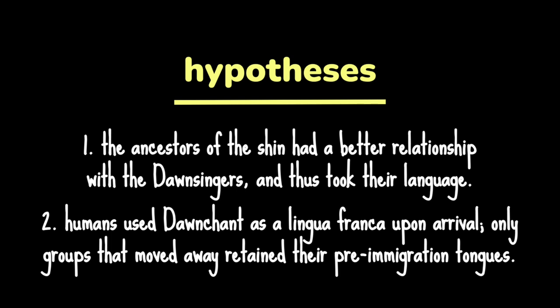The second hypothesis is that when humans migrated from Ashyn, they weren't a linguistically homogenous group — they instead spoke many different languages. And so to communicate, they used Dawnchat as a lingua franca, because it was the language native to their new home. This phenomenon is seen on Earth, whereby different immigrant groups in the United States, for example, speak English to one another despite neither of them speaking English natively.